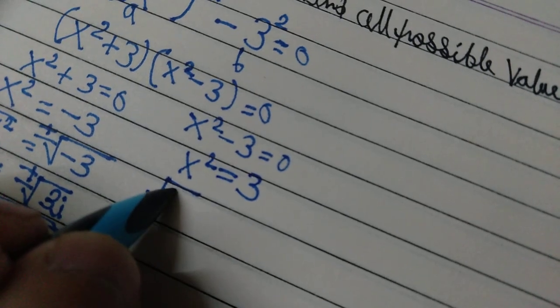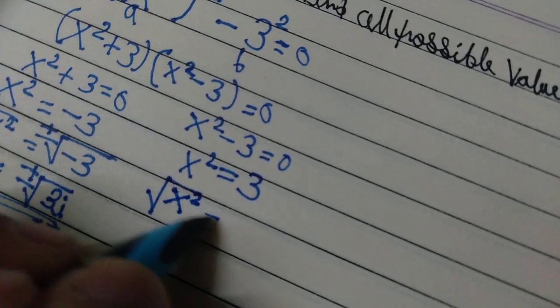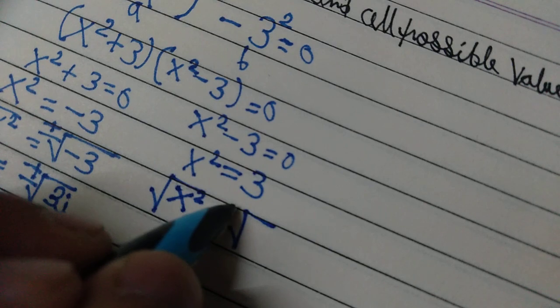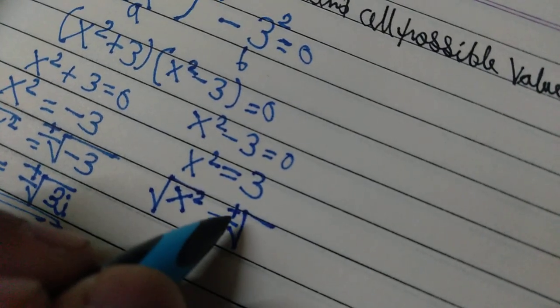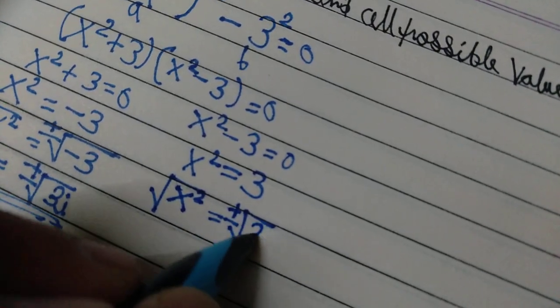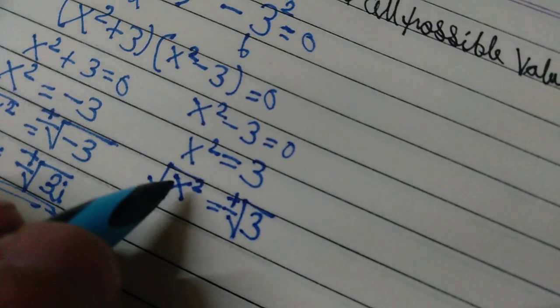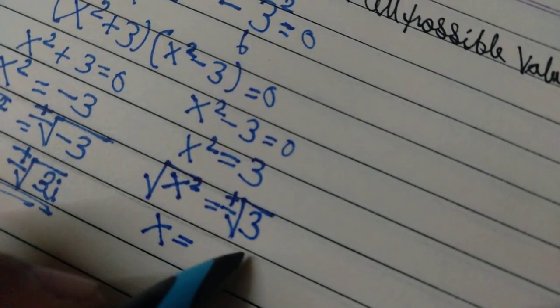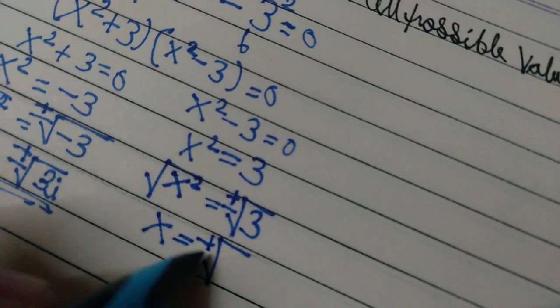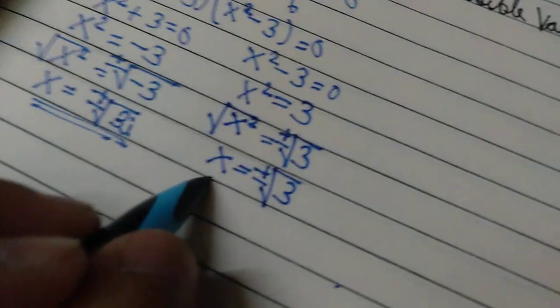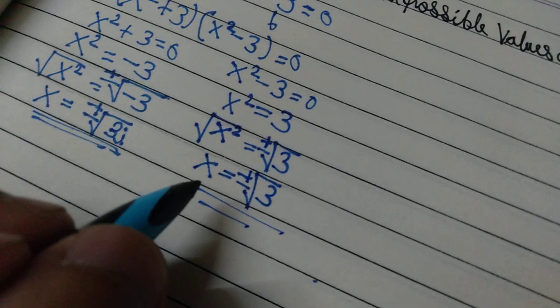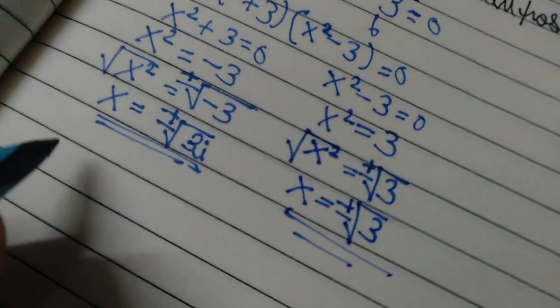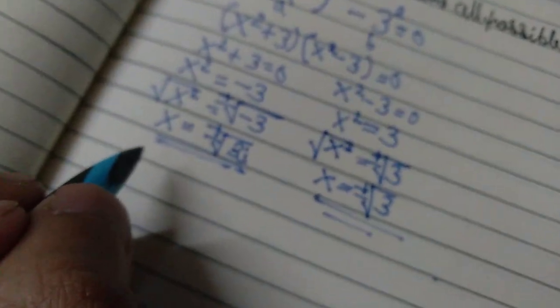We will do the same thing again, that is to take the square root of both sides. Please do not forget this plus minus sign. Root of x squared is again x, and that is equal to plus minus root 3. And these are our next two real solutions. So the four values of x are